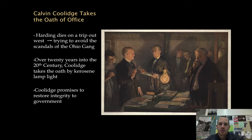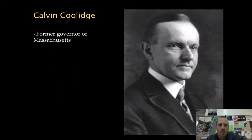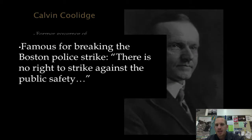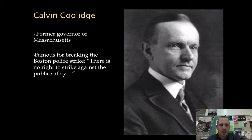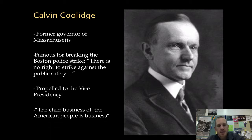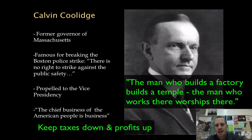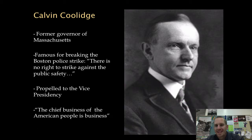Coolidge planned to restore integrity to government. Harding and Coolidge were polar opposites — Coolidge was about integrity in business, while Harding was about kickbacks and the good old boys club. Coolidge, the former governor of Massachusetts, gained notoriety for breaking the police strike, believing there is no right to strike against public safety, since a police strike would cause mass chaos. This propelled him to the vice presidency. He is quoted as saying, 'The chief business of the American people is business,' meaning America is capitalist and all about getting ahead.